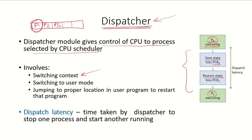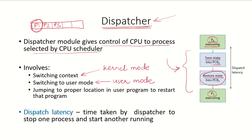When the dispatcher is running, it is a module of the operating system, so it operates in kernel mode. All this work is done in kernel mode. Once the job is done — the program counter value and registers have been loaded and restored for the new incoming process — the system switches into user mode. The new process starts executing only after the system has shifted into user mode, at which point the system goes to the proper location in the user program and restarts it.